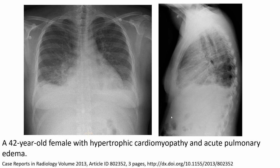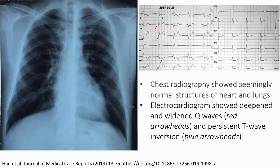This is the case of a 42-year-old female with hypertrophic cardiomyopathy and pulmonary edema. On frontal and lateral chest radiograph, the heart is enlarged with bilateral congestive changes of the lungs.